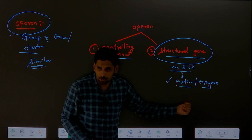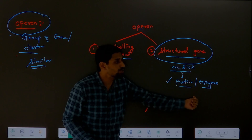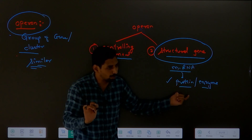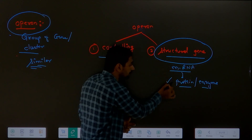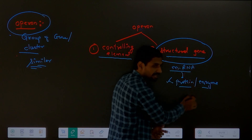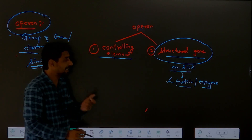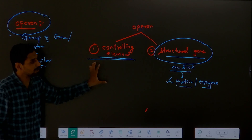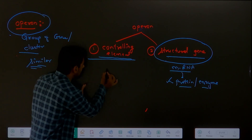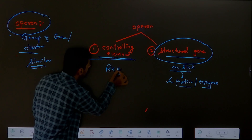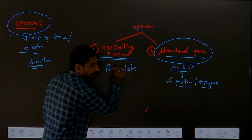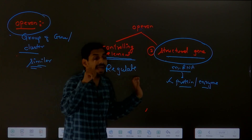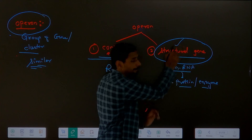The structural gene will produce some mRNA. Through this mRNA, translation will happen and then we will have proteins or enzymes. These proteins and enzymes perform very important functions in the body of an organism. Structural gene will produce protein or enzyme - who will decide this? The controlling element. Who will decide whether structural gene produces protein or not? The controlling element - it will regulate the expression of the structural gene.